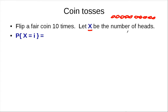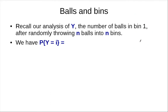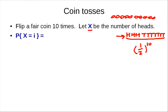If i is 3, one possible outcome will look like this. Since these coin tosses are done independently, the probability of getting exactly this outcome is 1/2 to the 10th, because each coin toss occurs with probability 1/2 and they are independent. This is true for any combination of heads and tails, because it's a fair coin.